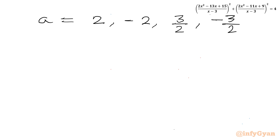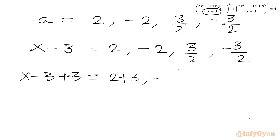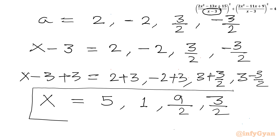Now a was our first substitution, a = x - 3. So x - 3 equals each of these values. Adding 3 to both sides: x = 2 + 3 = 5, x = -2 + 3 = 1, x = 3/2 + 3 = 9/2, and x = -3/2 + 3 = 3/2. So the real solutions for the given rational equation are x = 5, 1, 9/2, and 3/2. We can verify these as well.